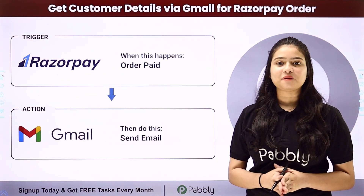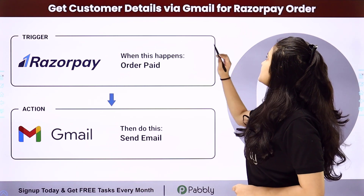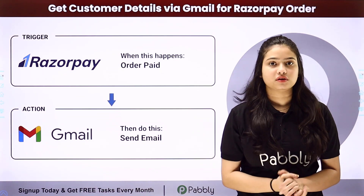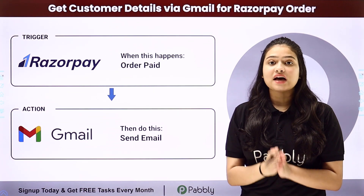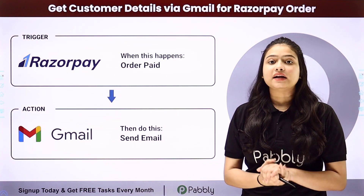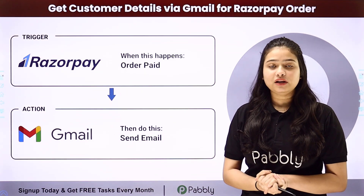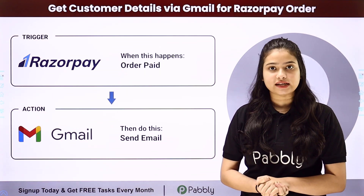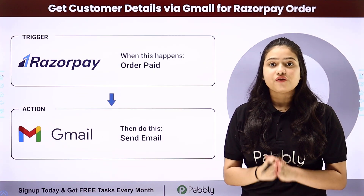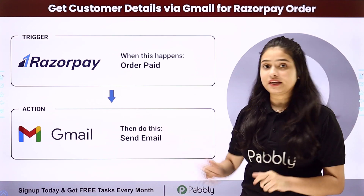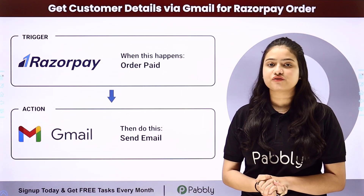Hello everyone, welcome back to Pabbly Connect. In this video, we are going to learn how to get customer details via Gmail for a Razorpay order. Suppose you are using Razorpay as your payment gateway platform, and as the owner of your company, you want that as soon as a new order is paid in your Razorpay account for a particular product, you should receive an email notification with the customer details for that order. For this, we will integrate both applications using the automation software Pabbly Connect.